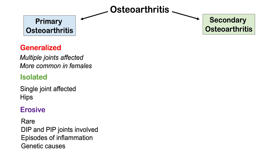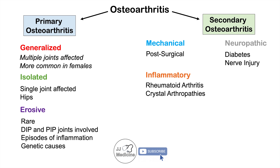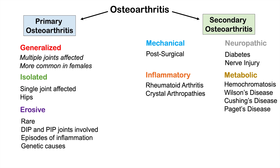Secondary osteoarthritis is caused by another medical condition. Causes include mechanical factors such as post-surgical cases; neuropathic causes like diabetes and nerve injury; inflammatory causes like rheumatoid arthritis and crystal arthropathies; metabolic conditions including hemochromatosis (iron deposition into joints), Wilson's disease (copper deposition), Cushing's disease, and Paget's disease; and blood conditions like hemophilia, which can cause hemarthrosis — bleeding into the joints — leading to joint damage.